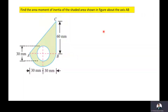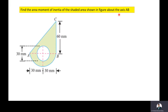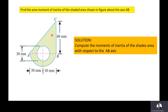The given problem is: find the area moment of inertia of the shaded area shown in the figure about the axis AB. Our objective is to compute the moment of inertia of the shaded region about the axis AB.